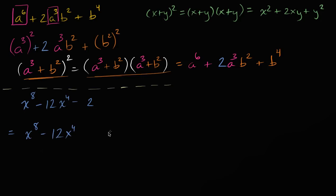We can write this as x to the eighth minus 12x to the fourth, and create some space to add and subtract something, then put a minus two out here. For it to be a perfect square, x to the eighth is x to the fourth squared, and we have an x to the fourth in the middle term. Just like completing the square with a quadratic, we take half the coefficient — which is six — and add the square of that, which is 36. But we also need to subtract 36 so we don't change the expression's value.